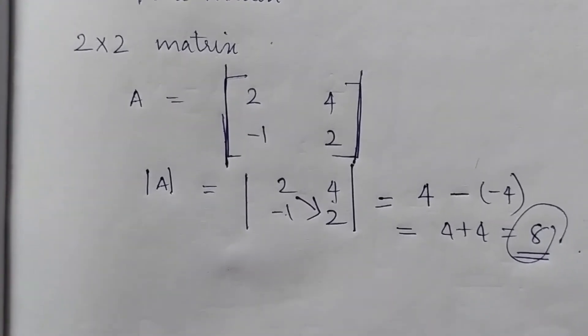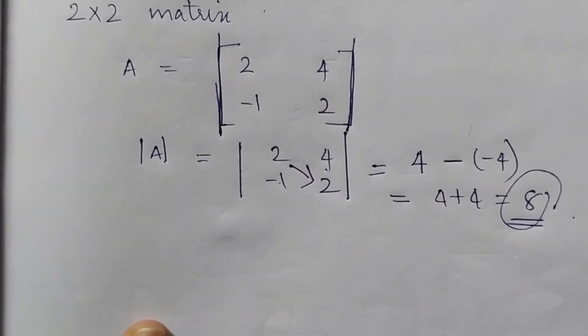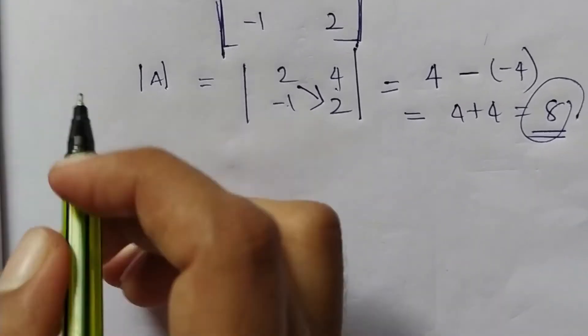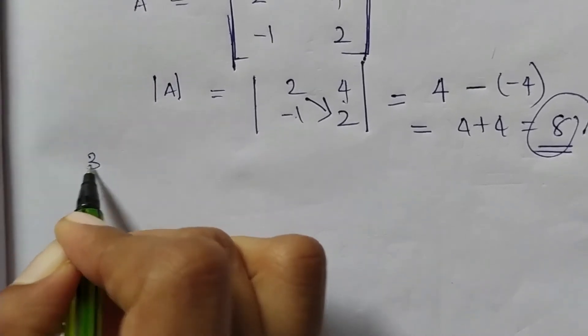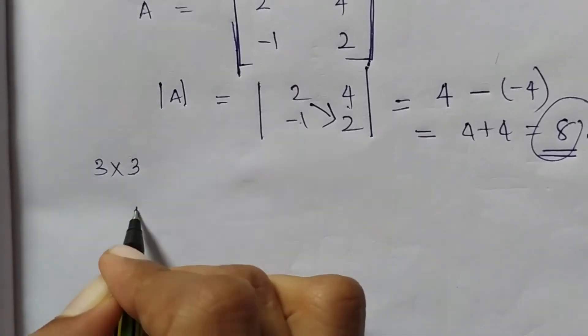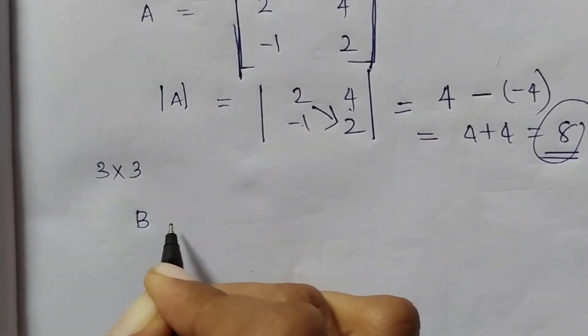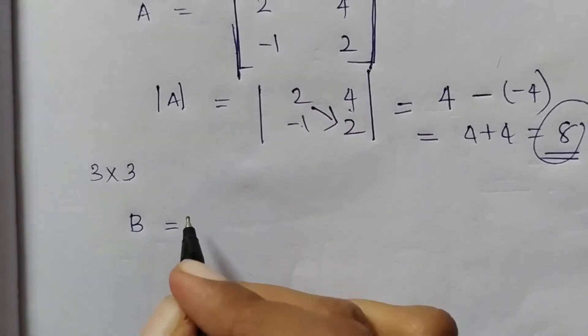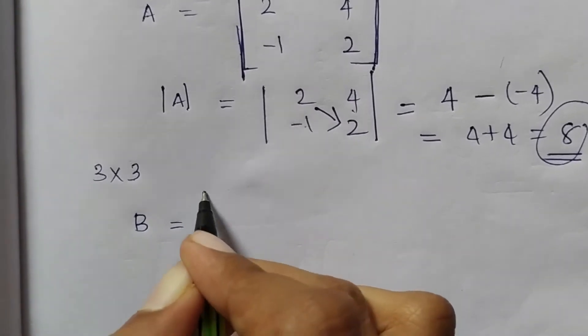Now we have a 3 by 3 matrix. Let's find the determinant of a 3 by 3 matrix, which we call matrix B.